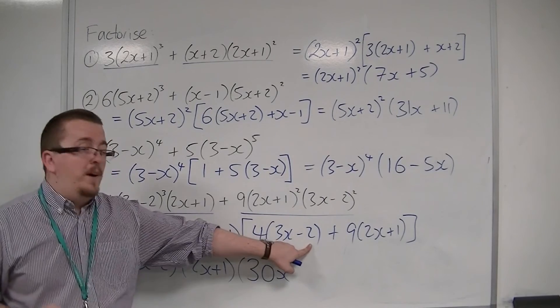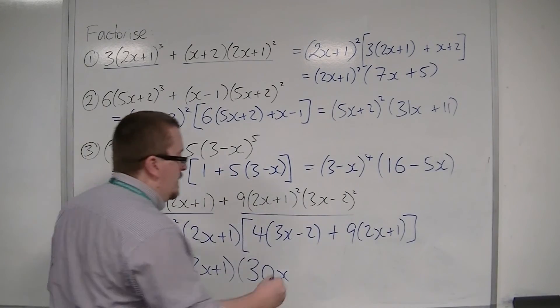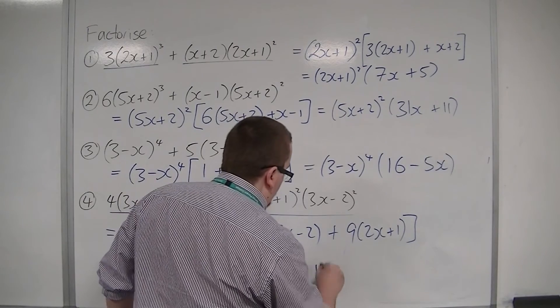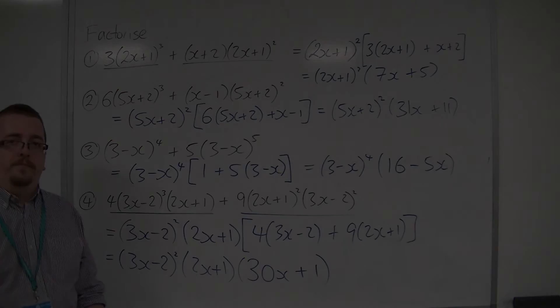And then I've got 4 lots of minus 2 is minus 8, plus 9. So, minus 8 plus 9 is plus 1. And that is in fully factorised form.